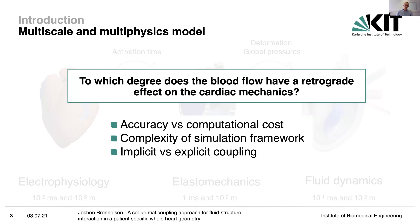This is important because computer models always have to accurately resemble reality, so we need to be as precise as possible. But on the other hand, we need to be as computationally effective as possible — keeping computational time and costs low. We need to figure out how complex our simulation framework has to be: for example, whether an implicit coupling is sufficient, or whether we need an explicit coupling. For all these questions, we need to find out how large the retrograde effect of the fluid dynamics onto the elastomechanics really is.